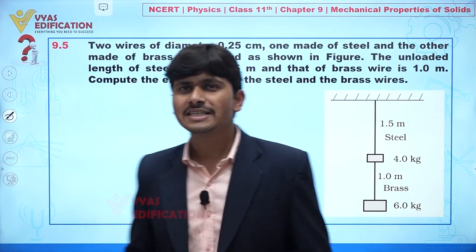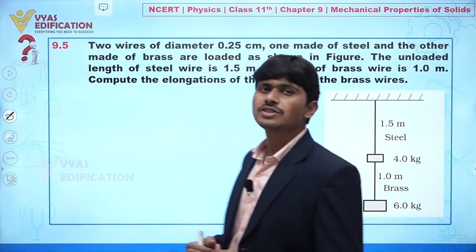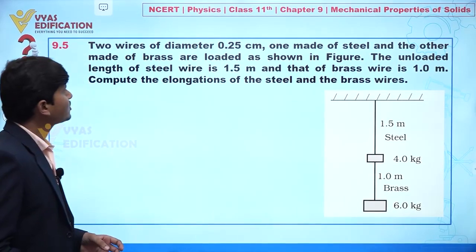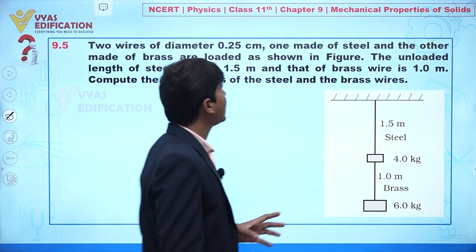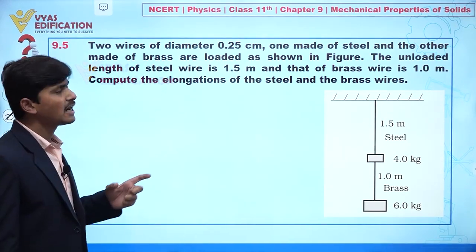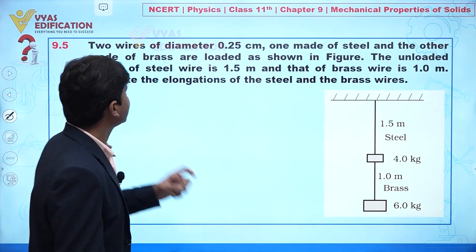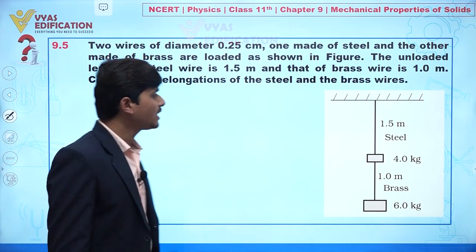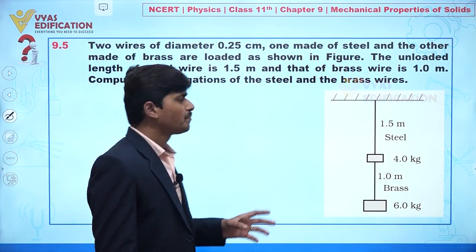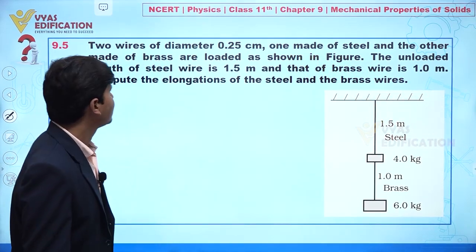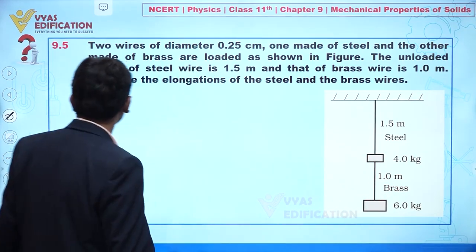We are going to discuss question number 9.5. In this question, two wires of diameter 0.25 centimeter — one made of steel and one made of brass — are loaded as shown in the figure. The unloaded length of the steel wire is 1.5 meters and for brass it is 1 meter. Our objective is to find the elongation of the steel and brass wires.